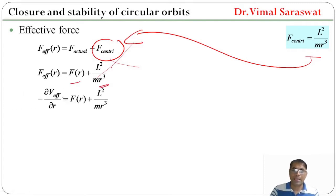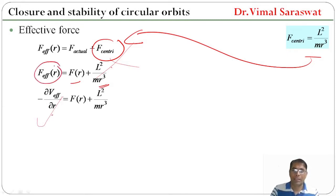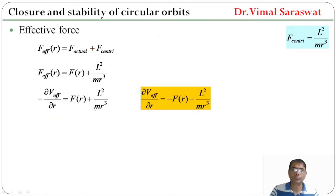Since F_effective = −∂V_effective/∂r, we replace F_effective accordingly. So −∂V_effective/∂r = F(r) + l² / (mr³), or equivalently ∂V_effective/∂r = −F(r) − l² / (mr³).